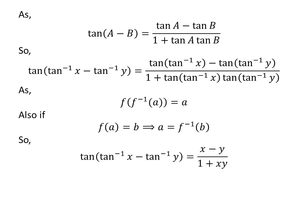As arctangent is the inverse of tangent, tangent of arctangent of x is equal to x and tangent of arctangent of y is equal to y. So tangent of arctangent of x minus arctangent of y is equal to (x minus y) upon (1 plus x times y).